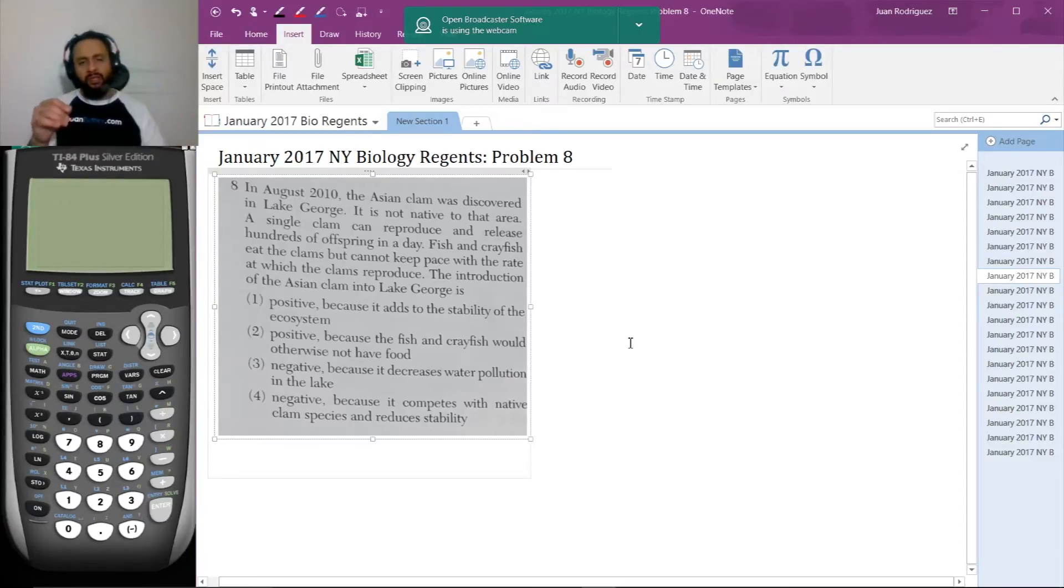The introduction of the Asian clam into Lake George is positive because it adds to the stability of the ecosystem, positive because the fish and crayfish would otherwise not have food, negative because it decreases the water pollution in the lake, or negative because it competes with the native clam species and reduces stability. Definitely try this problem on your own, and if you get the same answer as we do, hit the like button and let us know.